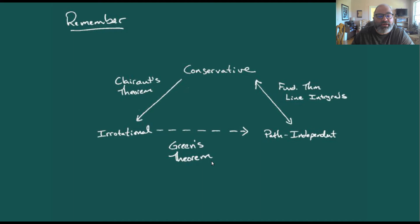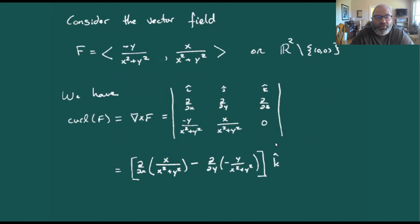We've talked about Green's theorem and gone through a bit of the proof in some previous videos. So now let's see if we can end up closing the loop, so to speak, between the curl of a vector field and path independence.